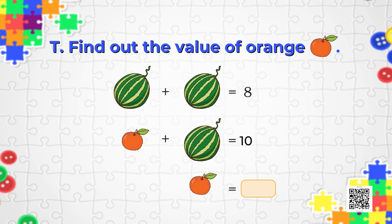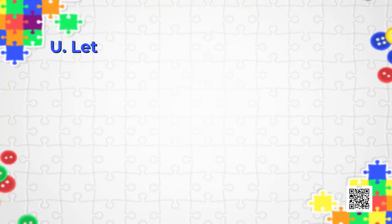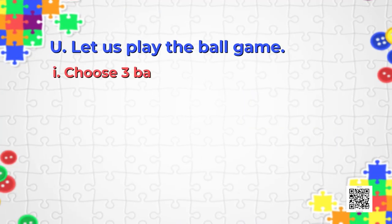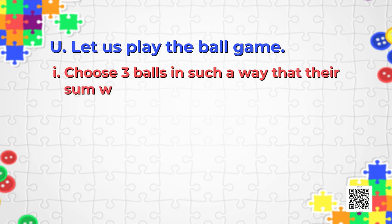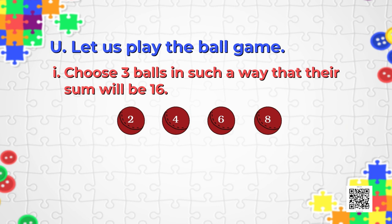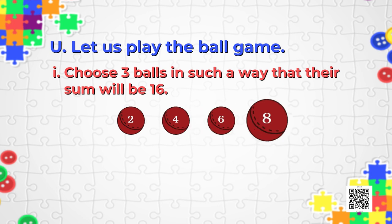Very easy! I'm sure you're jumping with the answers. Now it's time to play the ball game — puzzle U, which has some sub-questions. The first one says: choose three balls in such a way that their sum will be 16. We have four balls with numbers — 2, 4, 6, and 8. Choose three balls whose sum is 16. Quickly find it!